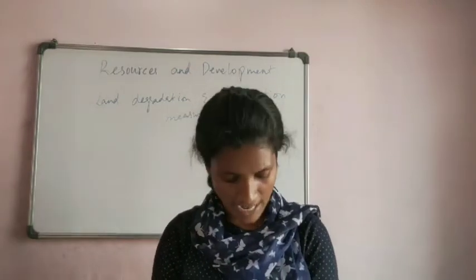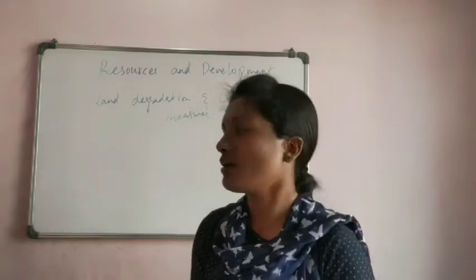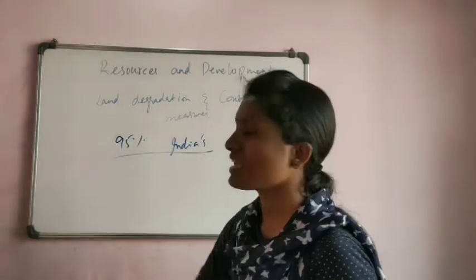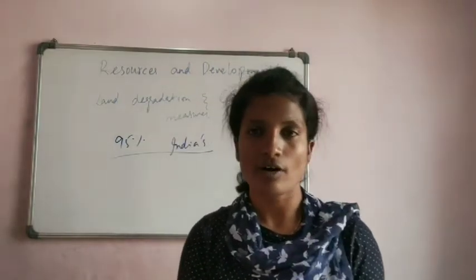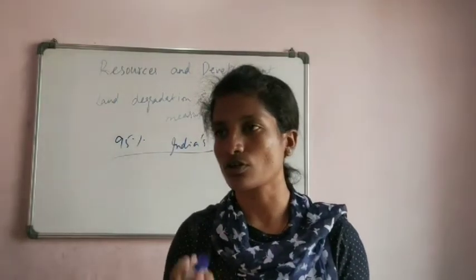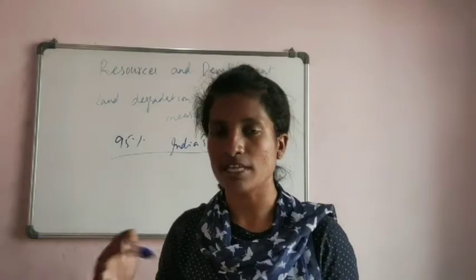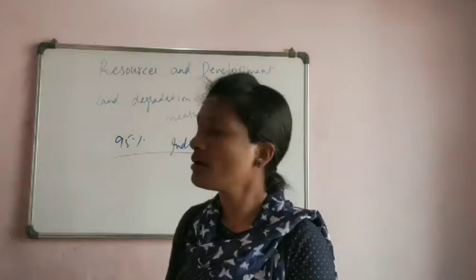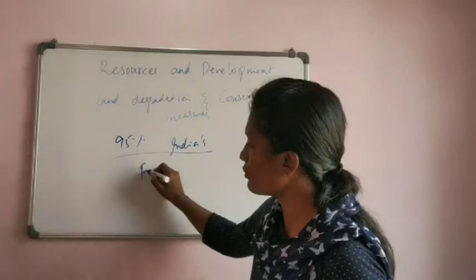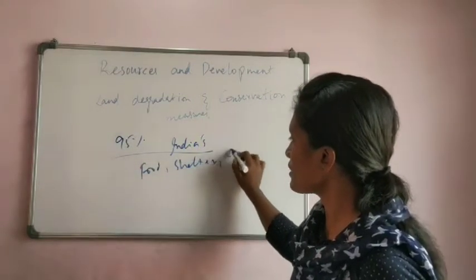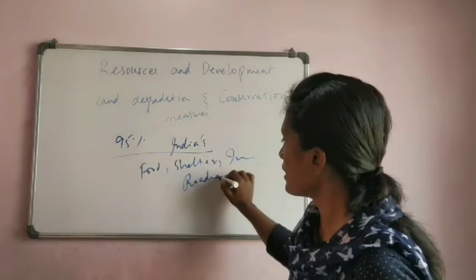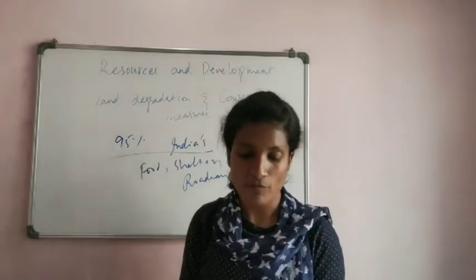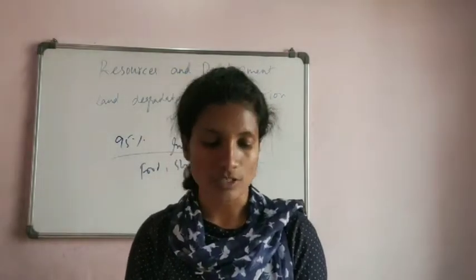About 95 percent of India's land is being utilized for our basic needs — we grow plants on land, build houses, and construct transportation systems like roadways and highways. Shelter, infrastructure, and buildings are all on the land. That is the importance of land.